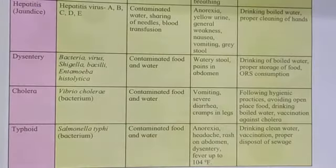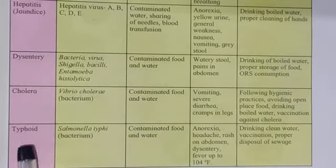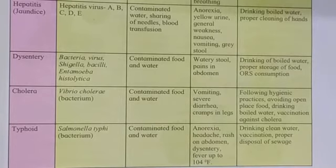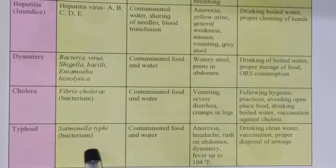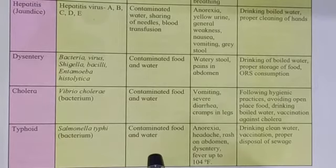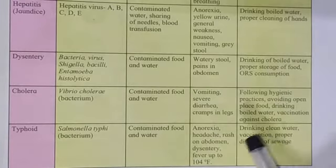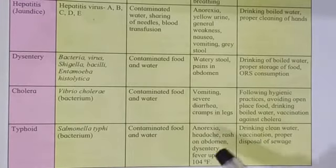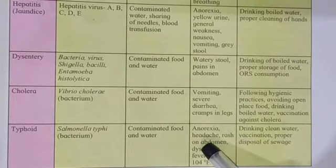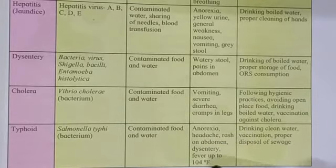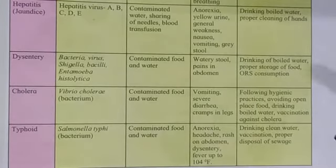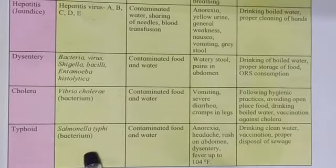The last disease we are going to discuss is typhoid. Typhoid means high fever, and it is caused by the pathogen Salmonella typhi, which is a bacterium. The mode of infection is contaminated food and water. The symptoms are: anorexia, headache, rash on the abdomen, dysentery, and fever up to 104 degrees Fahrenheit — that is very high. The body becomes too hot because the bacterium is present inside the body.